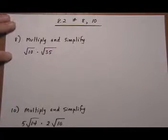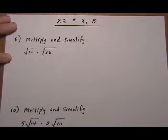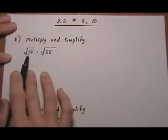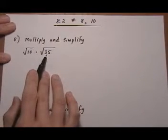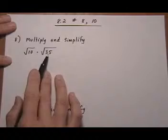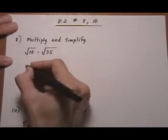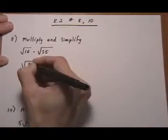Number 8 we want to multiply and simplify root 10 times root 35. I don't really see a perfect root here that would let me simplify this and root 35 is just 5 times 7. I don't see a perfect root here either. So I'm going to go ahead and put them under one radical and see if that helps.